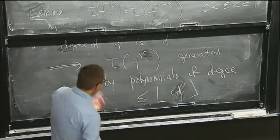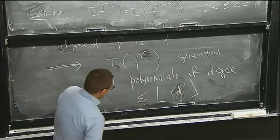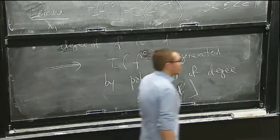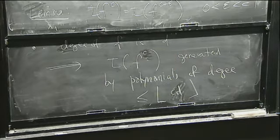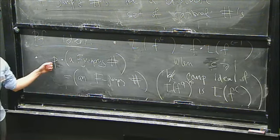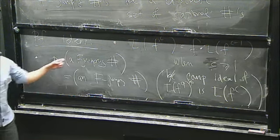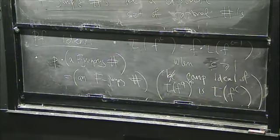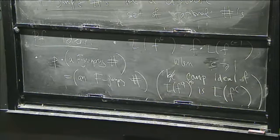So next: once I have discreteness, it's easy to check rationality. If you had an irrational jumping number, I can multiply by p as many times as I want, subtract off integer parts, and get back between 0 and 1. If you started off with something irrational, that gives you a contradiction because you'll have a non-discrete set between 0 and 1.